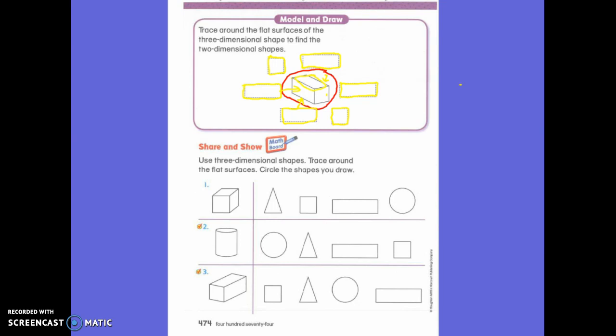So I have to have these six flat shapes to put together to make my three-dimensional shape. If I didn't have one of them, then I wouldn't be able to make my three-dimensional shape of the rectangular prism. So I need one, two, three, four rectangles and two squares to make my three-dimensional shape.